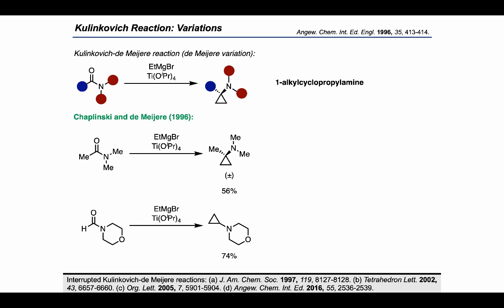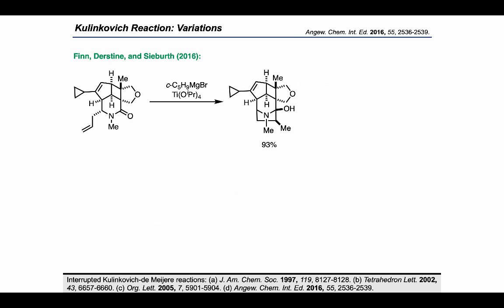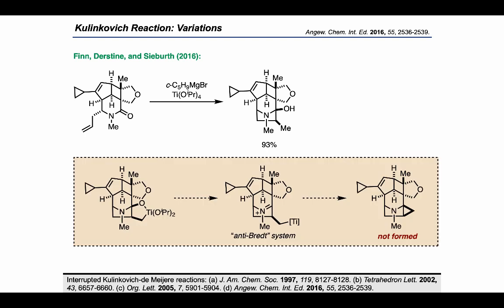The Kulinkovitch-De Meijere reaction also has an interrupted variant, exemplified where Finn, Durrstein, and Seberth treated a complex substrate bearing a lactam with a pendant alkene with cyclopentylmagnesium bromide and titanium tetraisopropoxide. The outcome was the formation of a single carbon-carbon bond, allowing the closure of the southernmost ring. Notably, no cyclopropane was formed, because drawing the oxatitanacyclopentane intermediate reveals that nitrogen-assisted cleavage of this ring would lead to an unfavorable anti-Bredt system, so no cyclopropane can form through this pathway.